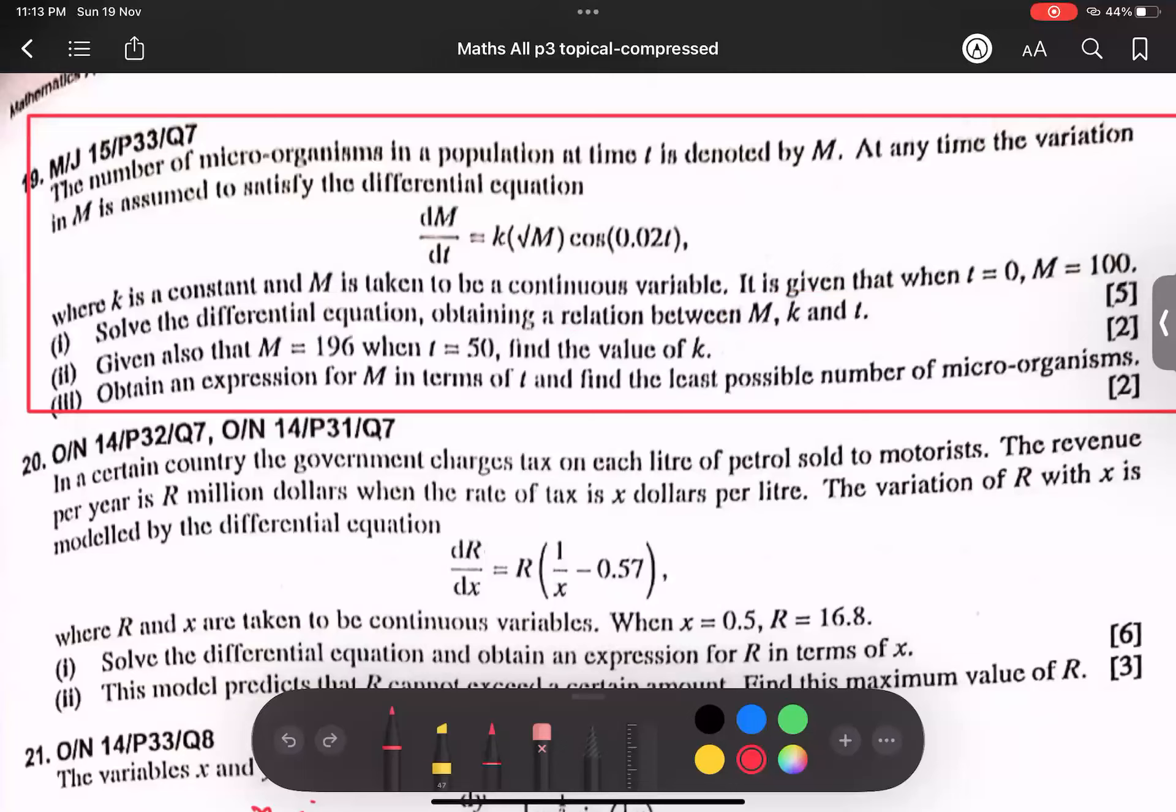We have first part, he said that relationship between M, K, and T. We don't know what is the subject. But part third is helping us find an expression for M in terms of T. So it means M is the subject. I will try to make M the subject, and then find least possible number of microorganisms. At least, maybe all of you know, derivative equals to zero. So dM by dT equals to zero. So let's start.